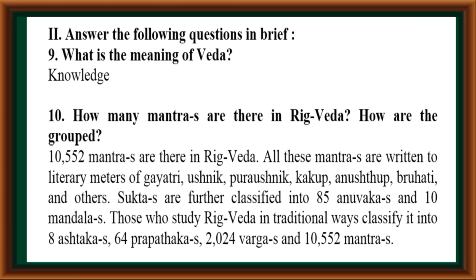All these mantras are written in literary meters of Gayatri, Ushnik, Paroshnik, Kakop, Anustub, Bruhati, and others. Suktas are further classified into 85 Anuvakas and 10 Mandalas. Those who study Veda in traditional ways classify it into 8 Astakas, 64 Prapaktakas, 2024 Vargas and 10,552 Mantras.